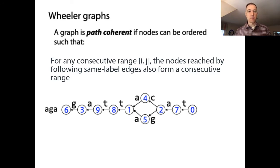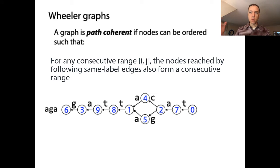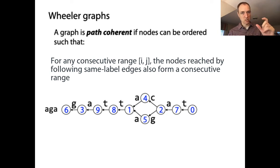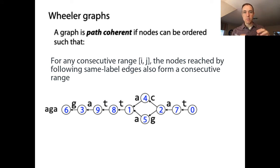Let's think of our matching algorithm as proceeding in steps, sort of like we did with the FM index, where we match longer and longer suffixes of the text. At each step we track an active subset of the nodes of the graph. To advance from one step to the next, we start with one set of active nodes, follow outgoing edges with a particular label matching the next character in our pattern, and arrive at a new set of nodes. We'd like to prove that the resulting set of nodes is also consecutive — following edges will never cause the range of nodes we're tracking to shatter into pieces.